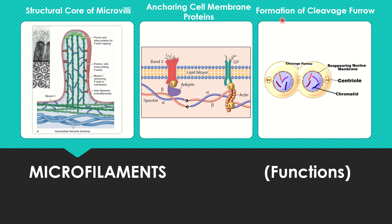Actin also helps in the formation of the cleavage furrow. When the nucleus divides, the cytoplasm also divides in a process called cytokinesis. In animal cells, a cleavage furrow is formed, and the actin filaments help in the formation of this cleavage furrow.